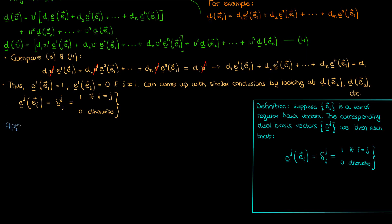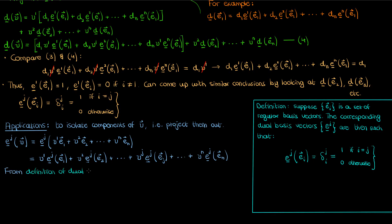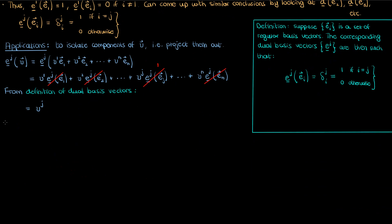One application of dual basis vectors is to isolate or project out components of regular vectors. If I apply some dual basis vector e super j to my regular vector v, that's the same as operating e super j on the expanded form of v from equation 1. Because this is a linear operation, e super j acts on each component. From the definition of the dual basis, all components cancel except where e super j operates on e sub j, leaving v super j. So the dual basis vector e super j projects out the jth contravariant component. That's why dual basis vectors have a superscript — they're used to isolate contravariant vector components.